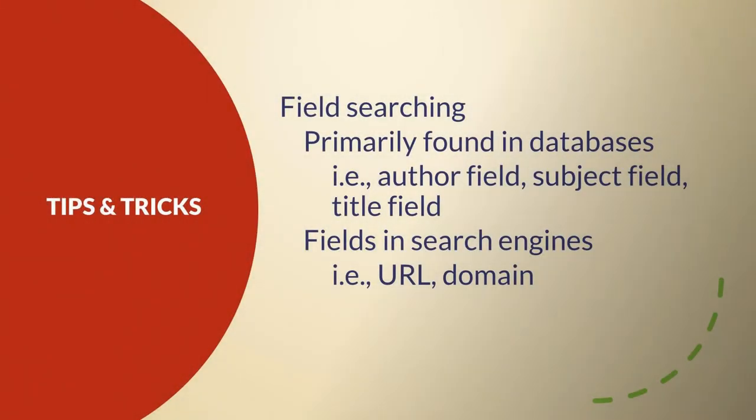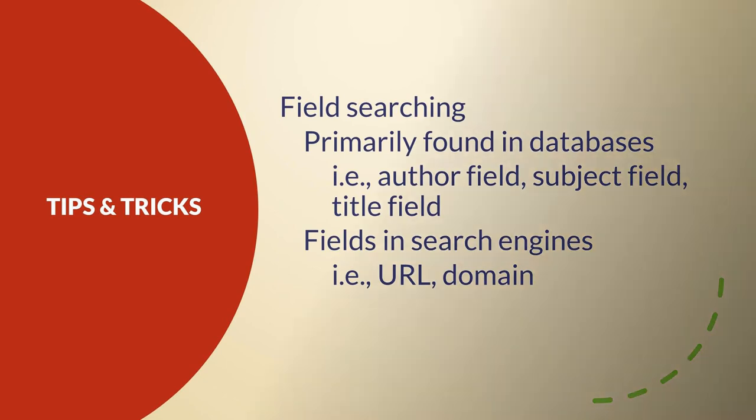Field searching is another way to narrow your search and get better results, and is primarily found in databases. For example, enter the author you are looking for in the author field rather than the keyword field if you want to find something by — rather than about — an author. Other useful field searches include subject and title fields. In a search engine, you can also specify a URL or domain by using fields.